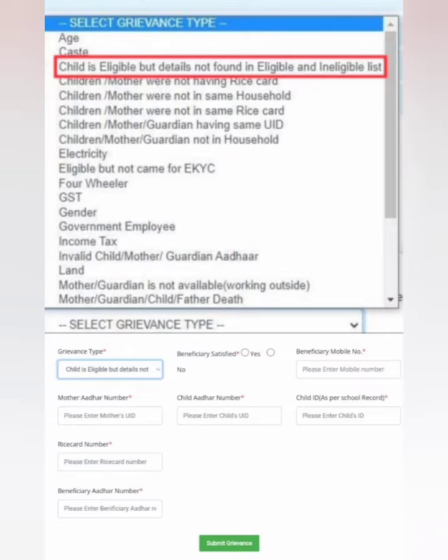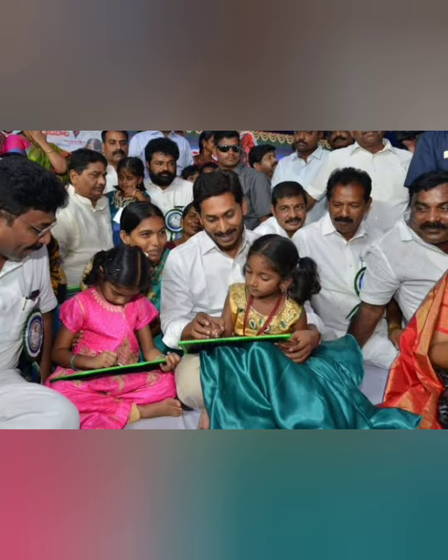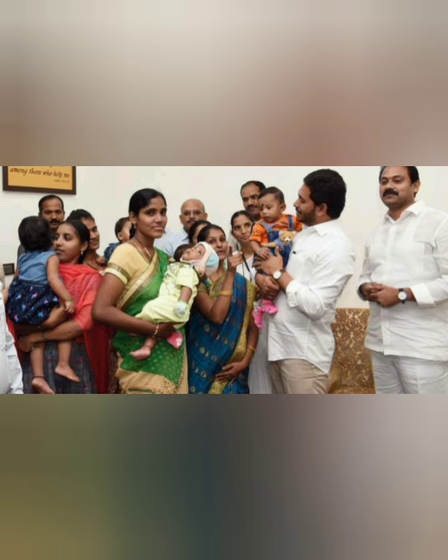We also have an option to get the grievance code. We have an application for the grievance code. We need to fill in the details and the problem. We need to fill the form, sign it, and submit the data to the education secretary for the authorization process. Download the form and submit it.